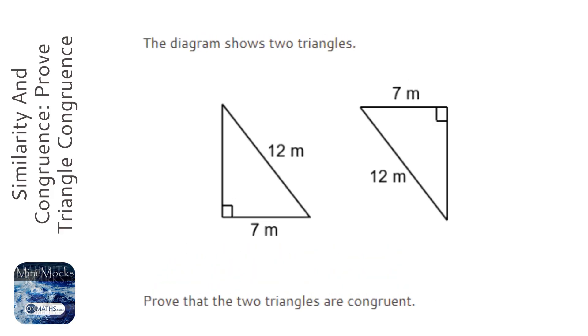Okay, so first of all, we are asked to prove that they are congruent. Now, congruent means exactly the same lengths, exactly the same angles, exactly the same shape, exactly the same thing, but you can rotate with congruency.